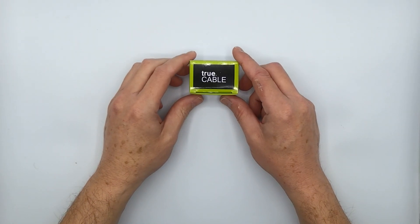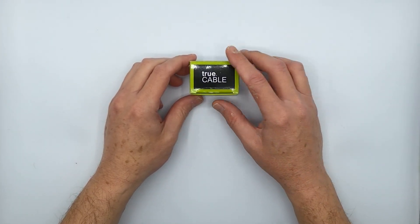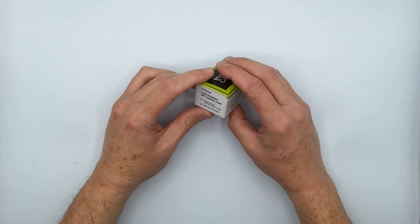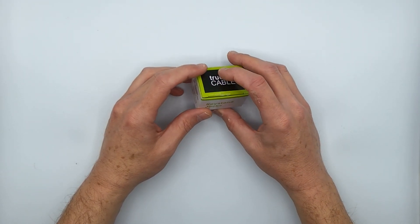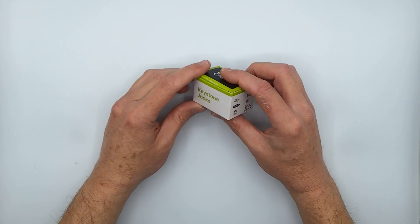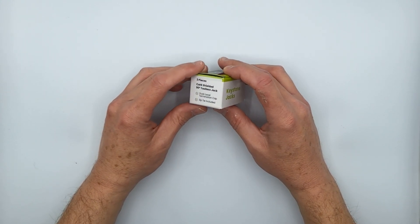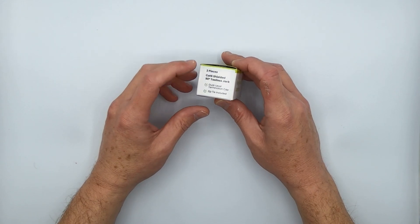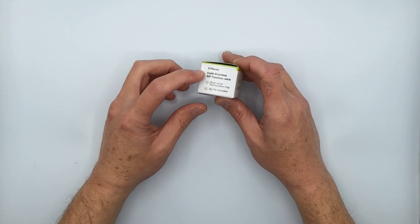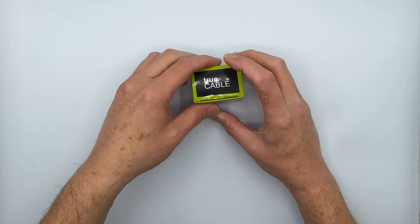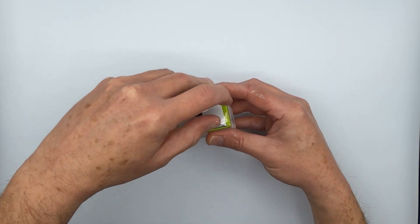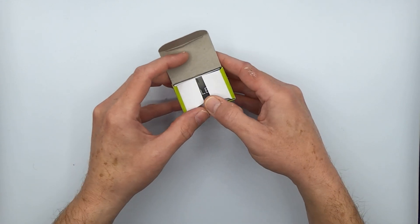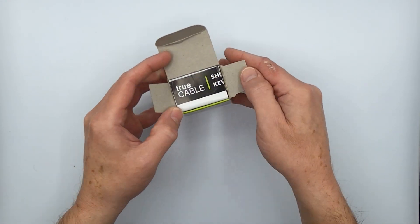Hey there Youtubers, this is Don at True Cable again, coming back at you with yet another piece of content. What we're going to be talking about today is one of the coolest things that we carry, and that is our shielded tool-less keystone jacks. These particular ones happen to be Category 6, and we'll just do a quick unboxing here.